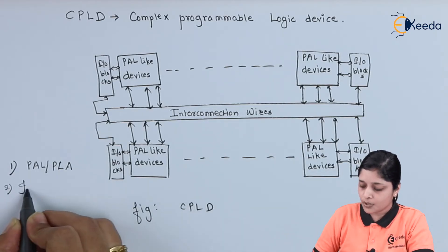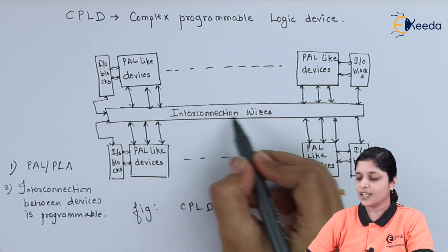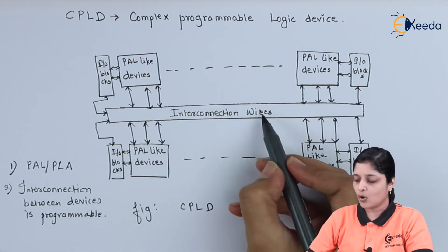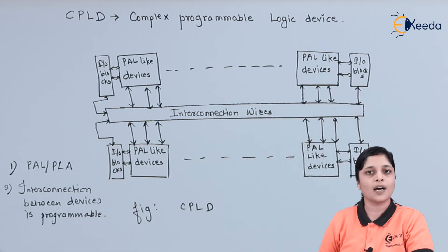Second most important point is programmable. We have shown here interconnection wires. All these wires are connected to each device and also IO blocks.